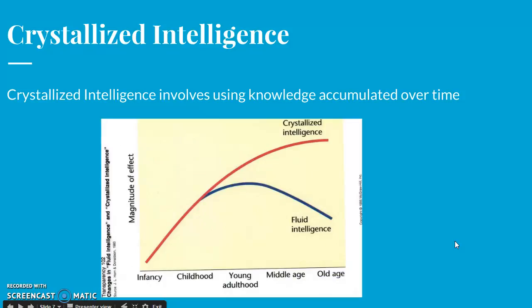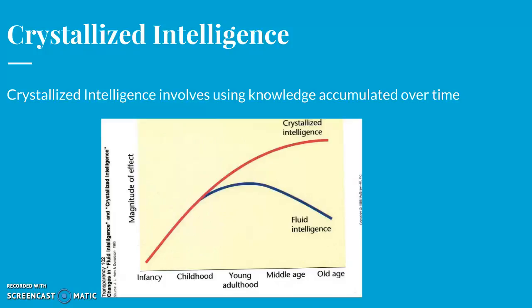The other kind is crystallized intelligence, which involves using knowledge accumulated over time. While it does fade with old age, it doesn't do so at the rapid rate of fluid intelligence. Research shows crystallized intelligence holds steady or may even increase. For example, a 20-year-old may learn a computer language faster than a 60-year-old, but the older person may have the advantage on a vocabulary test or an exercise dependent on wisdom.